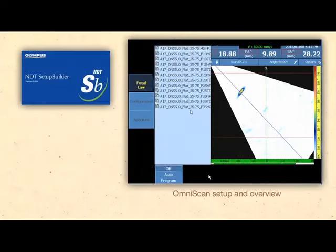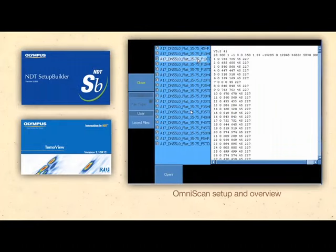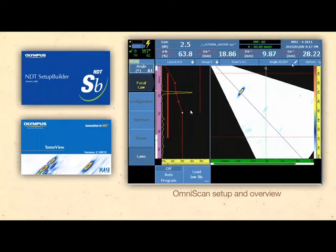Law files are imported from either the Olympus Setup Builder, TomoView Calculator, or library of predefined law files for S-Scan configuration to include angular range and focus.